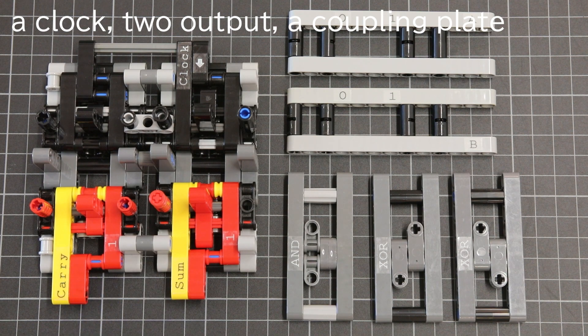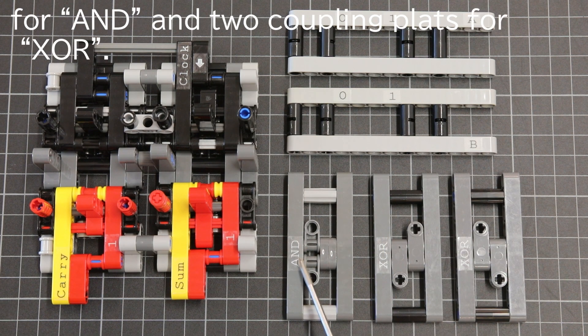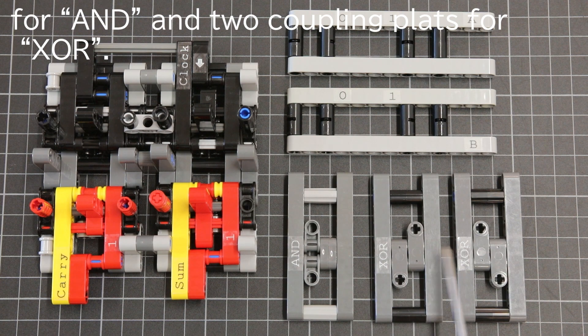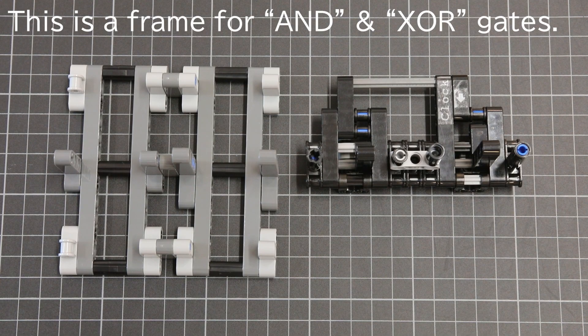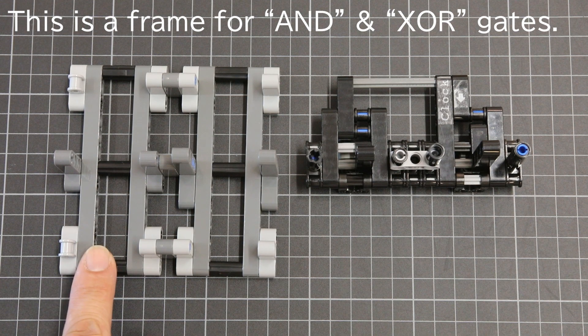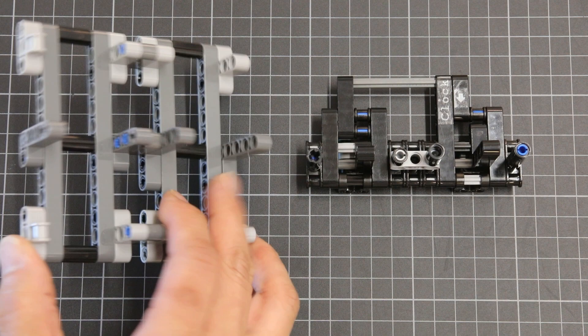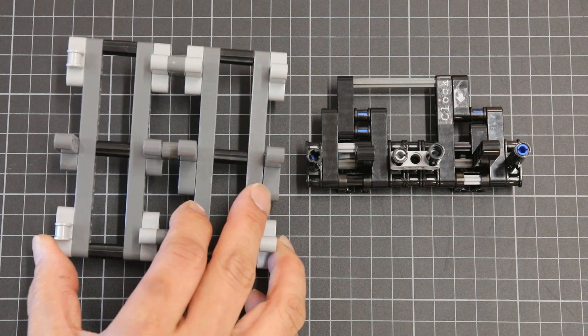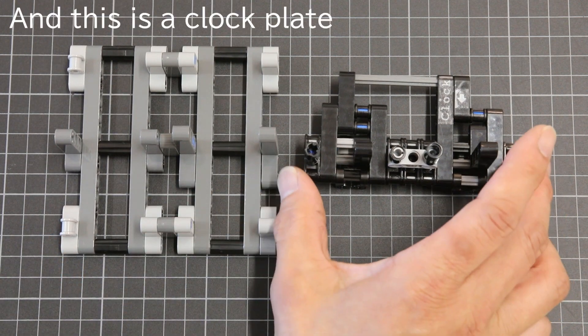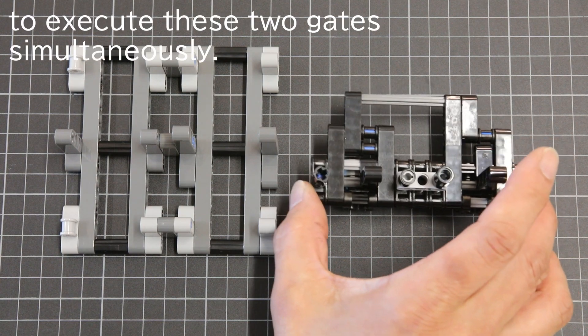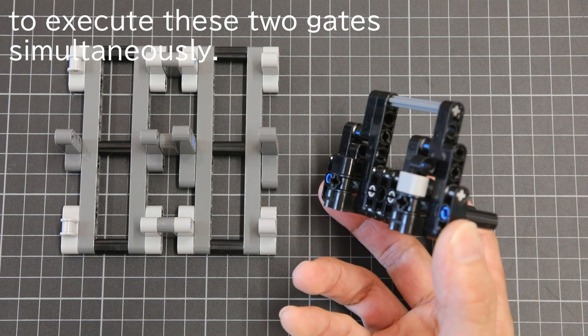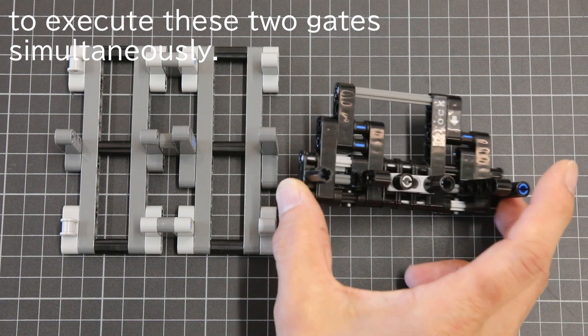It has a coupling plate for AND and two coupling plates for exclusive OR. This is a frame for AND and exclusive OR gates, and this is a clock plate to execute these two gates simultaneously.